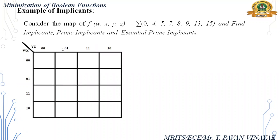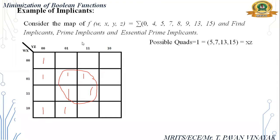I am drawing the K-map here now. The K-map has minterms 0, 4, 5, 7, 8, 9, 13, 15. First, I found a quad here. The expression for the quad is XZ.